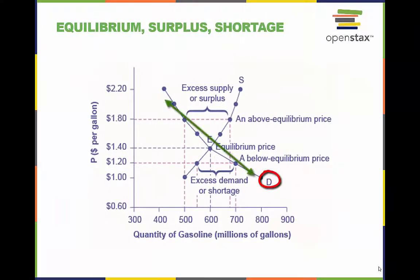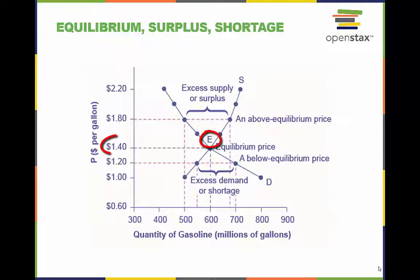The demand curve D and the supply curve S intersect at the equilibrium point E, with a price of $1.40 and a quantity of 600. The equilibrium is the only price where quantity demanded is equal to quantity supplied. The price and quantity that make up the equilibrium point are referred to as equilibrium price and equilibrium quantity.